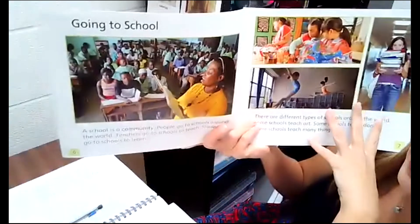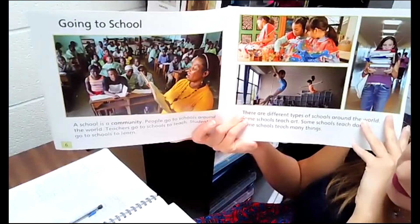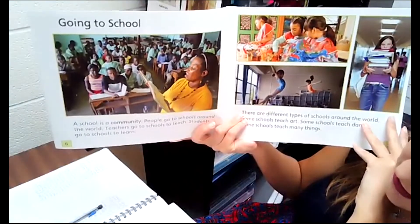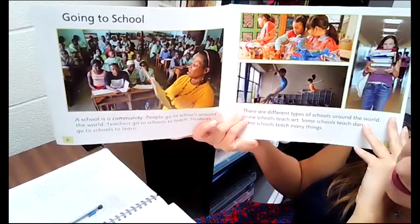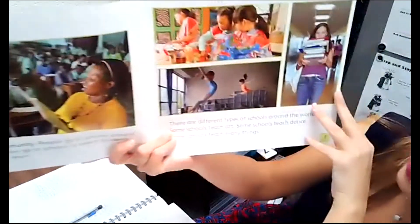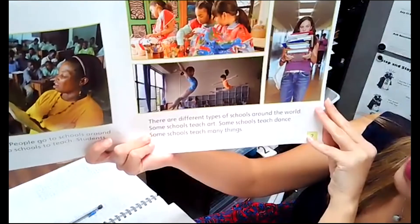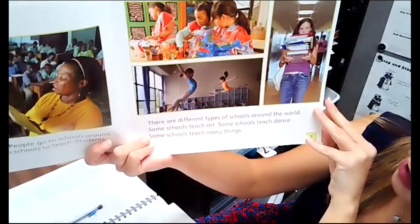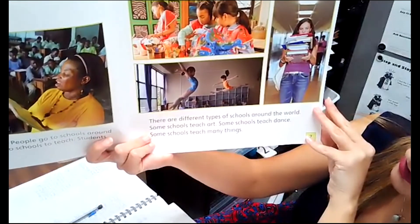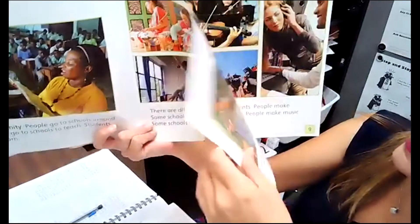Going to school. A school is a community. People go to schools around the world. Teachers go to schools to teach. Students go to school to learn. There are different types of schools around the world — some schools teach art, some schools teach dance, and some schools teach many things.